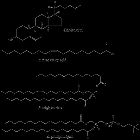Biological lipids originate entirely or in part from two distinct types of biochemical subunits or building blocks: ketoacyl and isoprene groups. Using this approach, lipids may be divided into eight categories: fatty acids, glycerolipids, glycerophospholipids, sphingolipids, sacrolipids, and polyketides derived from condensation of ketoacyl subunits, and sterile lipids and prenol lipids derived from condensation of isoprene subunits.